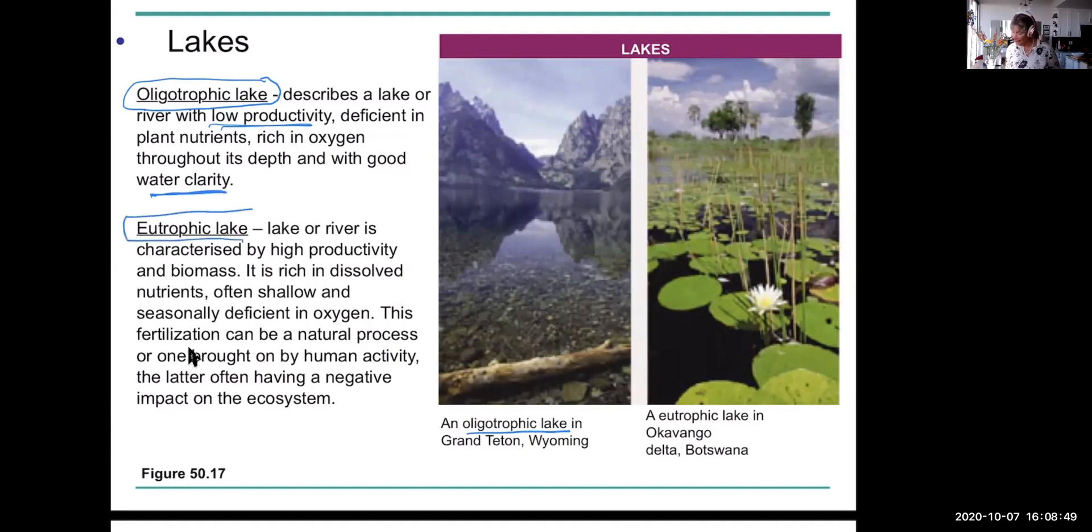A eutrophic lake, on the other hand, has high productivity and a lot of biomass, lots of dissolved nutrients, but usually deficient in oxygen because the bacteria that's decomposing is using up all of the oxygen or much of the oxygen in a lake. So a eutrophic lake here in BC would be, all of our urban lakes are eutrophic. Deer lake in Burnaby, right here where I live, Lost Lagoon. Very eutrophic. Very, very nutrient rich. So there's tons of plant growth as you can see here in our eutrophic lake. But you don't get plant growth like lilies and such in an oligotrophic lake.